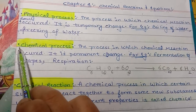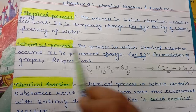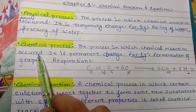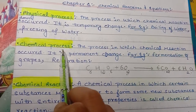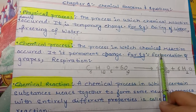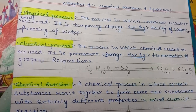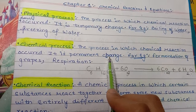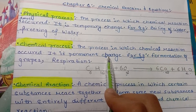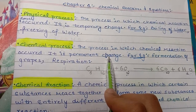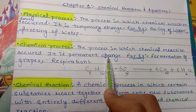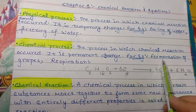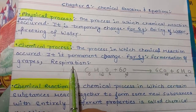The second definition is the chemical process. The chemical process is a process in which chemical reactions occur. It is a permanent change — whatever is formed cannot be reversed. For example, fermentation of grapes and respiration are examples of the chemical process.